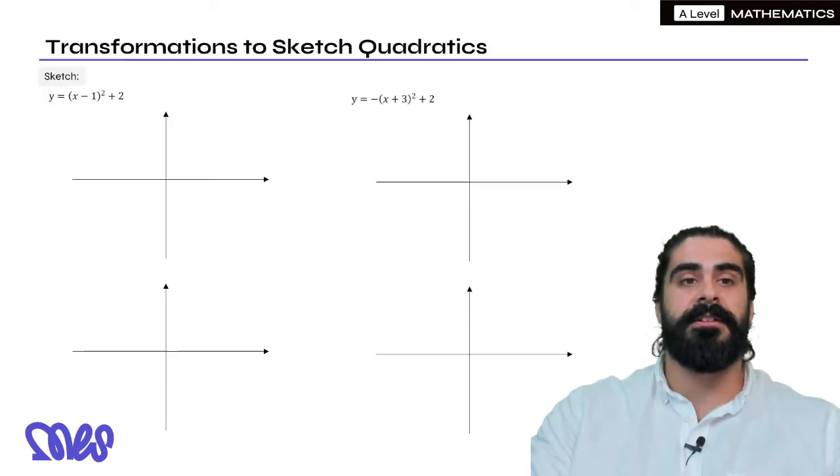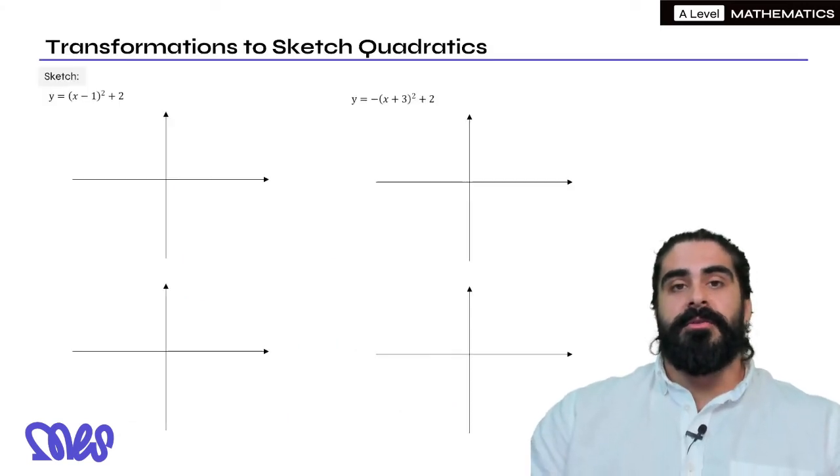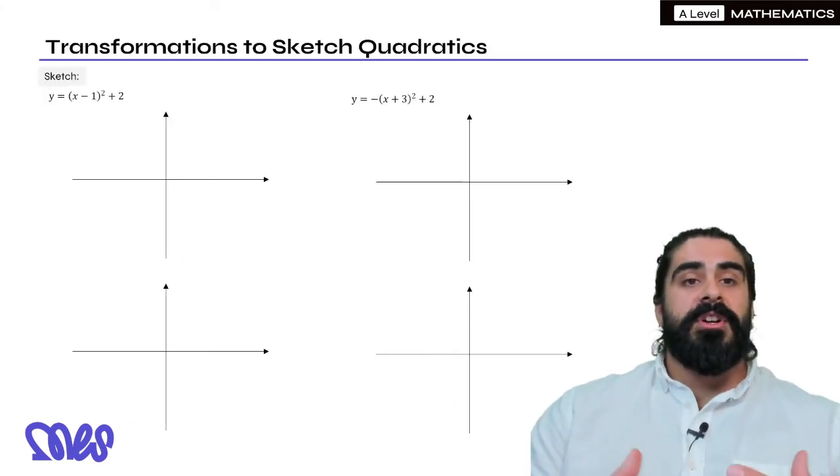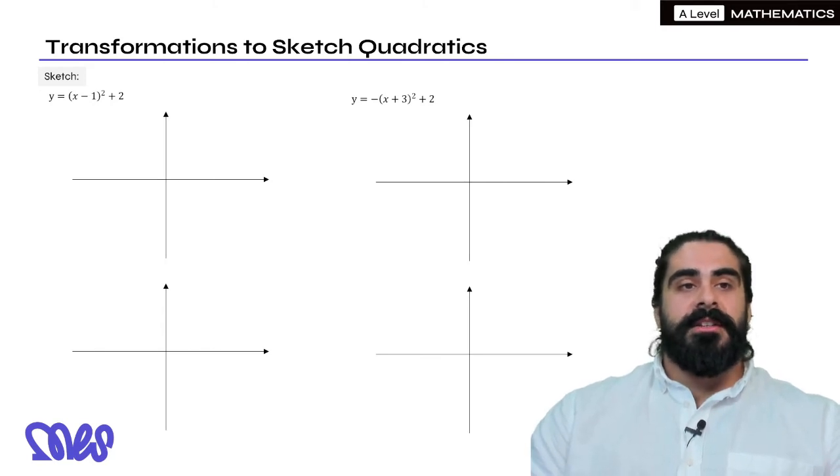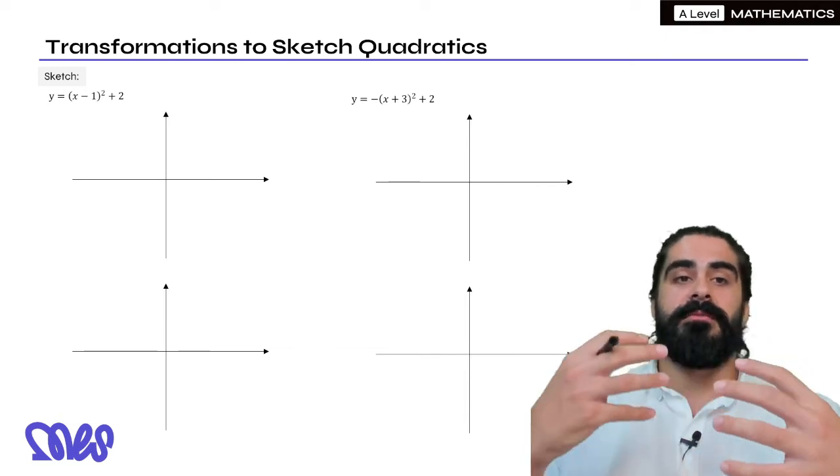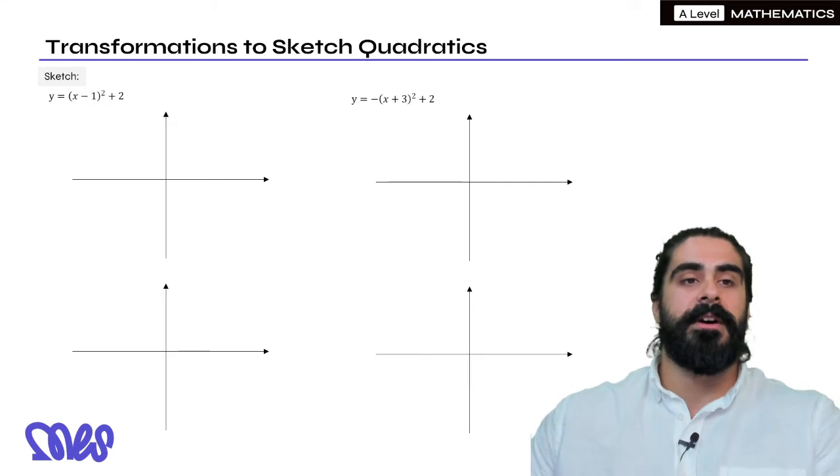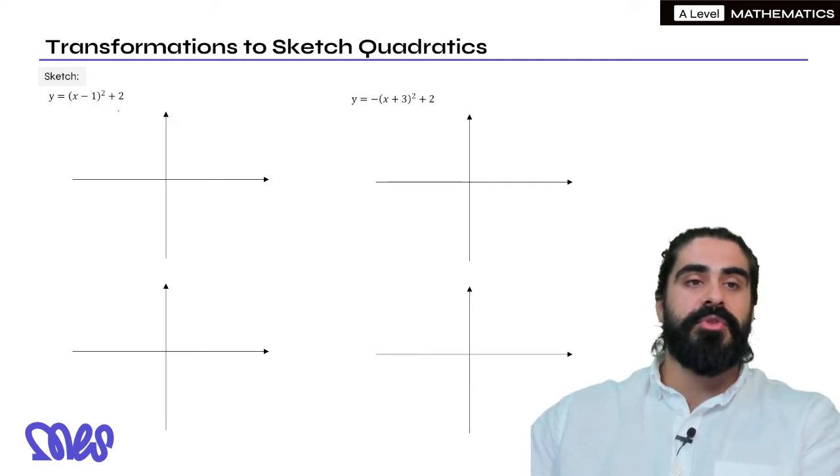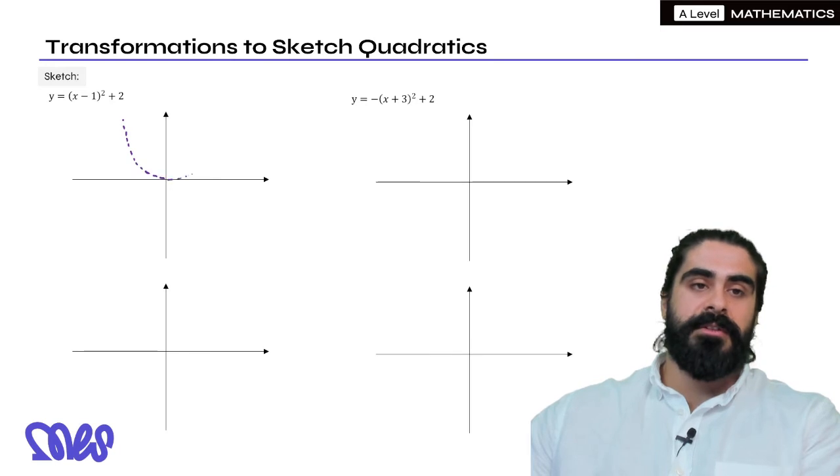So let's see how this works practically. Transformations to sketch quadratics. Sketch y = (x-1)²+2. For the first bit I'm going to do my general sketch with my transformations then I'm going to draw my final image. Remember these are all just transformations of the x² graph. I'm just going to do it in dotted.